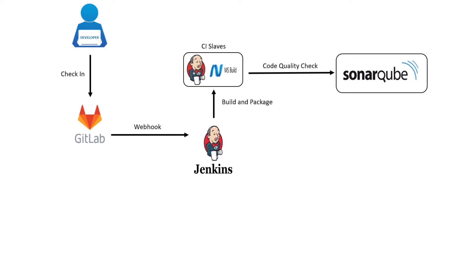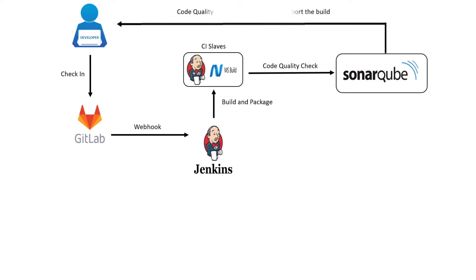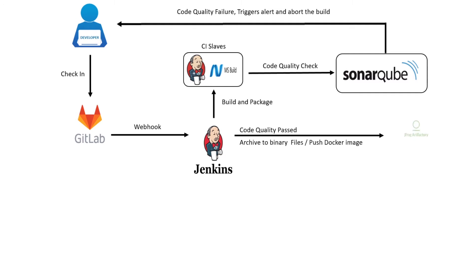When the code doesn't meet the quality standards, an alert mail will be triggered to the development team and the pipeline will be aborted. Once the code meets the quality standard, the archived .NET application package will be pushed to the JFrog Artifactory repository.